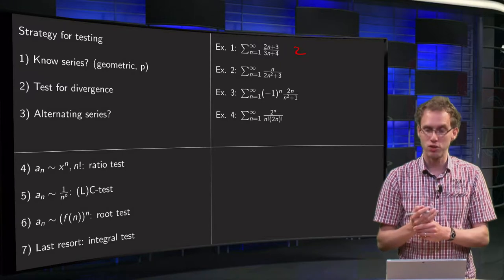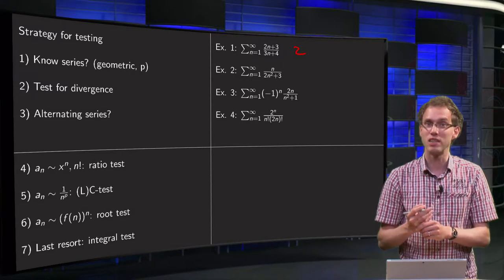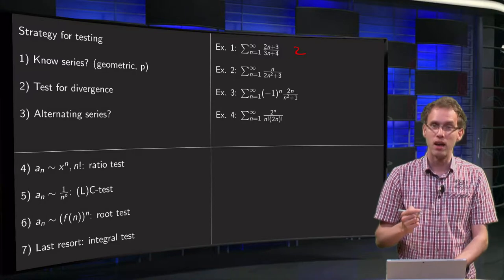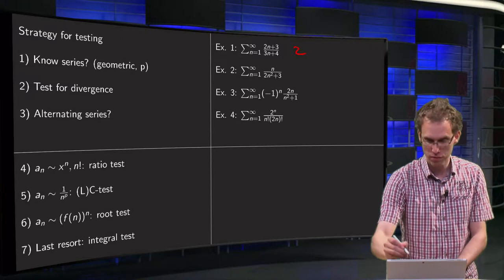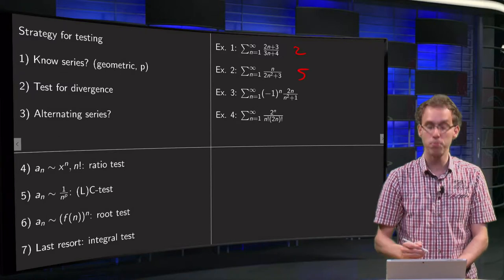What happens if n tends to infinity? Well then the terms behave more or less like 2 over n, sorry, 1 over 2n, so they behave more or less like a p-series, so 5 the limit comparison test will probably work.